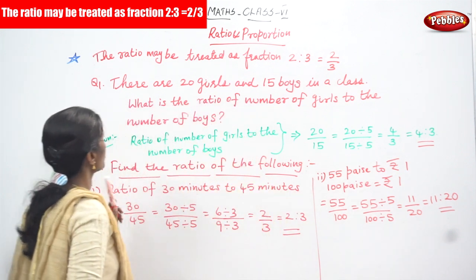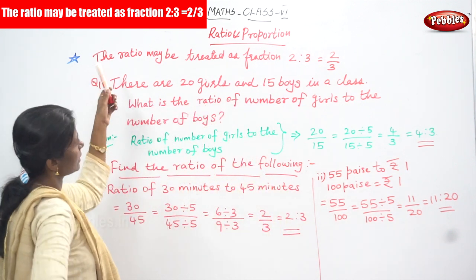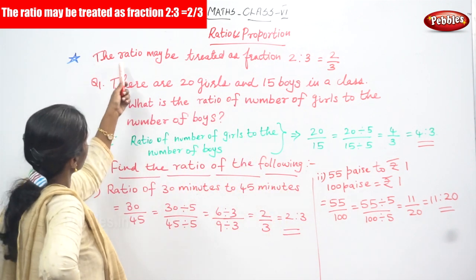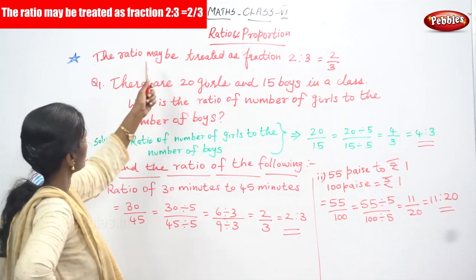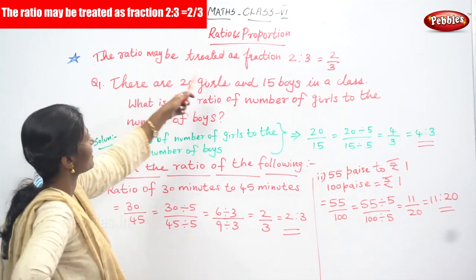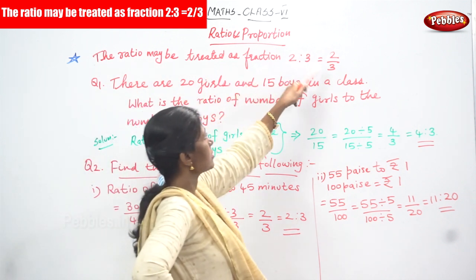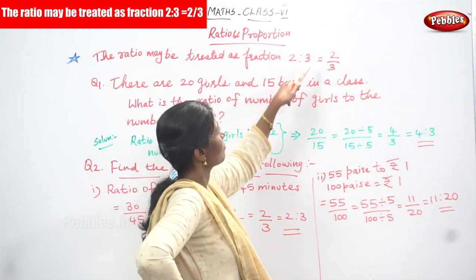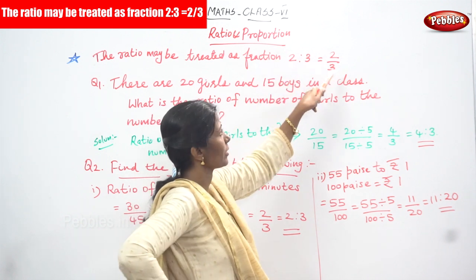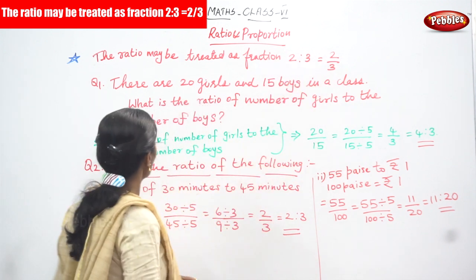Now we are going to solve problems in ratio. The ratio may be treated as a property or rule. The ratio may be treated as a fraction. For example, 2 is to 3 is equal to 2 by 3. So you have to convert the ratio into a fraction, that is 2 by 3.